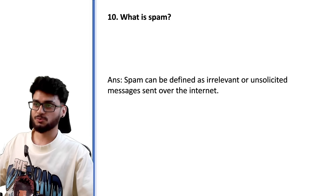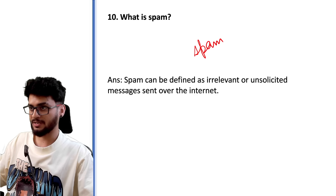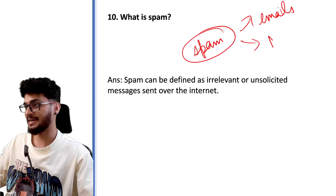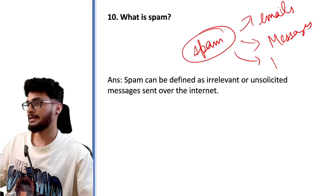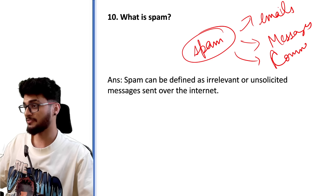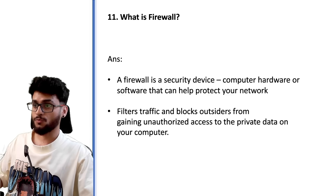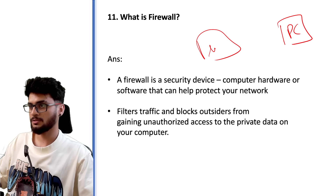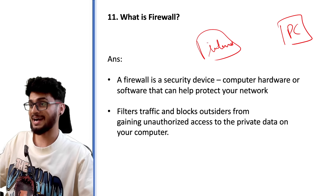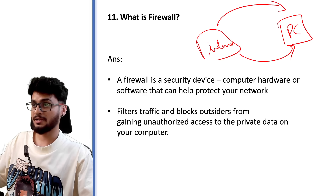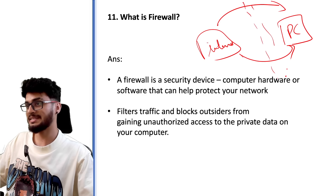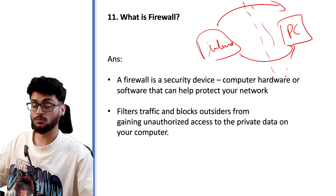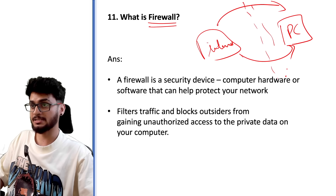What is spam? Spam refers to random emails you have not asked for, or random messages and comments on Instagram, Facebook, or YouTube. What is a firewall? For example, you have a PC connected to the internet and hackers can try to access your PC. A firewall stops these attacks by protecting your network — it first checks who is trying to enter your network before allowing access.